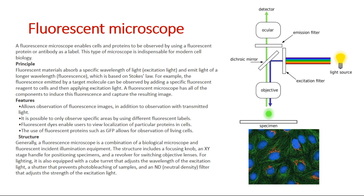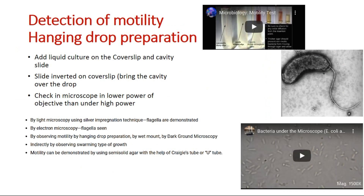The last slide covers detection of motility by hanging drop preparation. We add liquid culture on the coverslip, invert a cavity slide over the drop, bring the cavity over the drop, check under the microscope at lower power objective then under high power. We can also use the silver impregnation technique to see flagella by light microscopy, or observe flagella by electron microscopy. We prepare hanging drop preparations to detect motility in phase contrast microscopy, and indirectly by observing the swarming type of growth. Motility can also be demonstrated using semi-solid agar with the help of cratch tubes or U-tubes. Thank you for your attention.